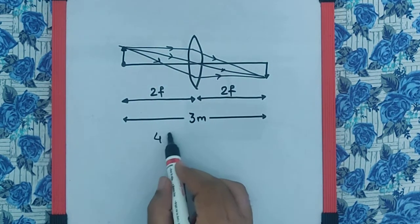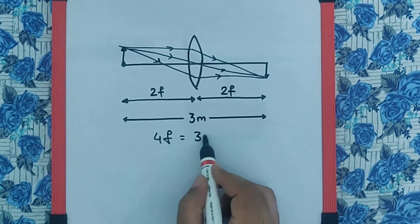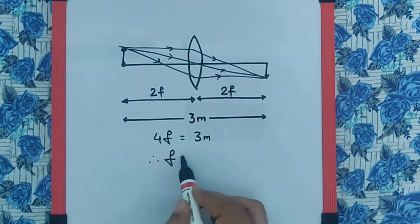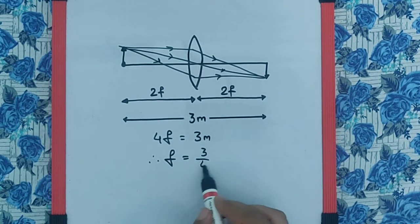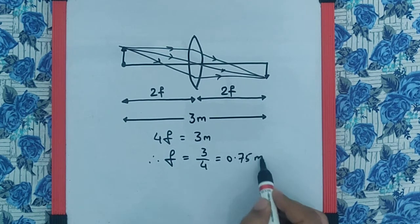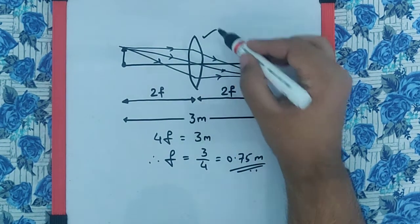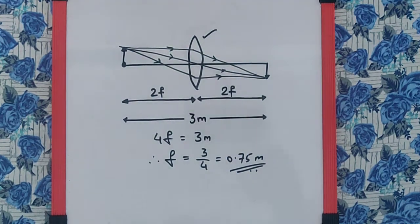And so, 4f is equal to 3 meters, that means the maximum focal length we should have is 3 by 4, which is 0.75 meters for the convex lens used. And that is the final answer.